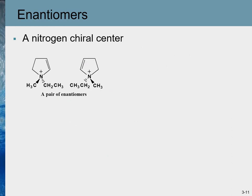In all the examples so far, chirality arises because of the presence of a chiral center, and in all these examples the chiral center was a tetrahedral carbon bonded to four different groups. However, this is not always the case. There are certain examples in which chirality arises because of some other atom. For example, in one molecule a nitrogen is the chiral center — both molecules are mirror images of each other and are non-superimposable, hence they are a pair of enantiomers.